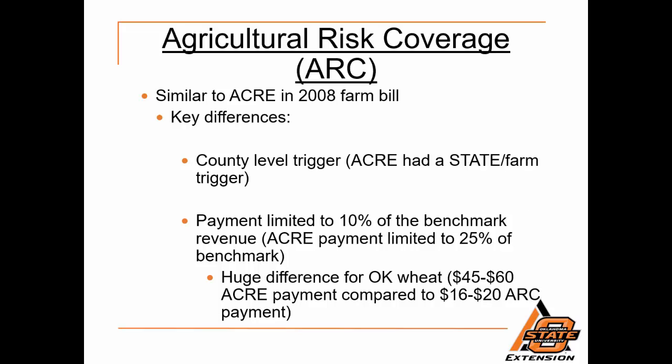Agricultural Risk Coverage is similar to the ACRE Program in the 2008 Farm Bill. Some key differences are the county level trigger, whereas ACRE had a state or farm level trigger. Also, payments under ARC are limited to 10% of the benchmark revenue, whereas ACRE payments were limited to 25% of the benchmark. This is a huge difference for Oklahoma wheat producers, as ACRE provided a $45 to $60 per acre payment whereas ARC will provide a $16 to $20 per acre payment depending upon yields and prices.